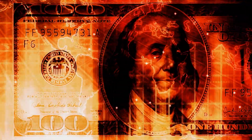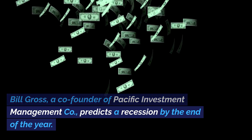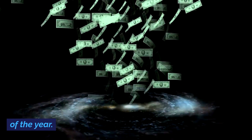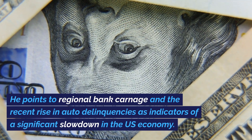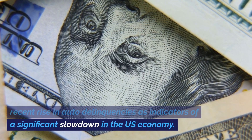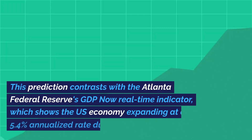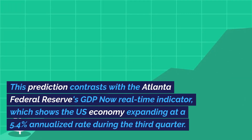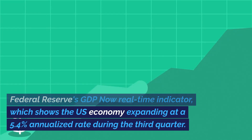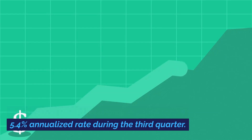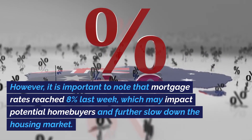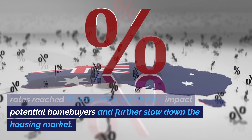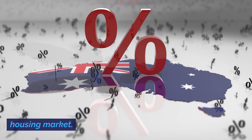Economic Outlook: Bill Gross, a co-founder of Pacific Investment Management Company, predicts a recession by the end of the year. He points to regional bank carnage and the recent rise in auto delinquencies as indicators of a significant slowdown in the U.S. economy. This prediction contrasts with the Atlanta Federal Reserve's GDP Now real-time indicator, which shows the U.S. economy expanding at a 5.4% annualized rate during the third quarter. However, mortgage rates reached 8% last week, which may impact potential homebuyers and further slow down the housing market.